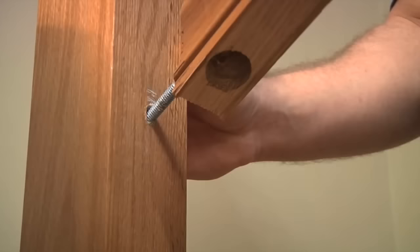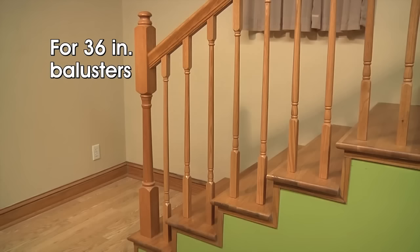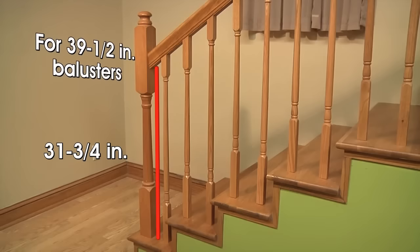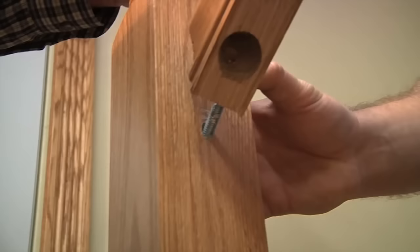Then attach the handrail to the bottom newel post. For 36 inch balusters, measure up 31 and 3 quarter inches from the stair to the bottom of the handrail. For 39 and a half inch balusters, measure up 35 and a quarter inches. Attach the handrail to the bottom newel with a rail fastener.